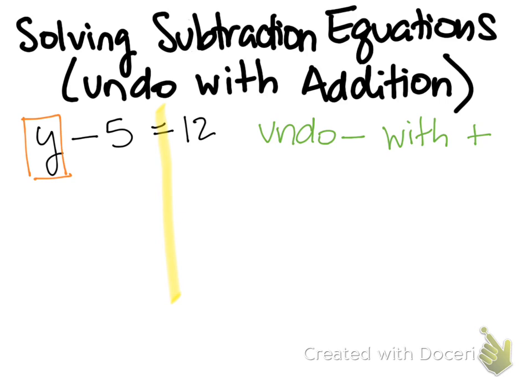So I undo my subtraction with addition. I'm going to add 5, and I must do that on both sides of the equal sign.